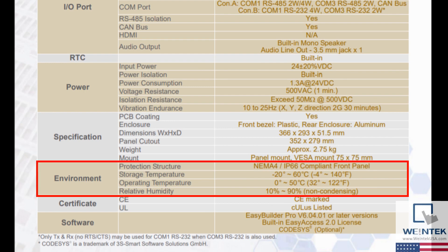Next is the environment section. This section will provide important details for storage and operation specifications. NEMA, the National Electrical Manufacturers Association, will give ratings to enclosures for electrical components. The NEMA 4 rating says that this unit is able to withstand dust, rain, snow, and hose directed water. IP or ingress protection has various ratings for products. This specific model has a rating of IP66 which protects against hose directed water, rain, or snow. It is not intended to be submerged in water.